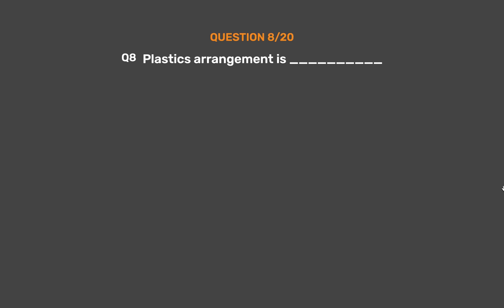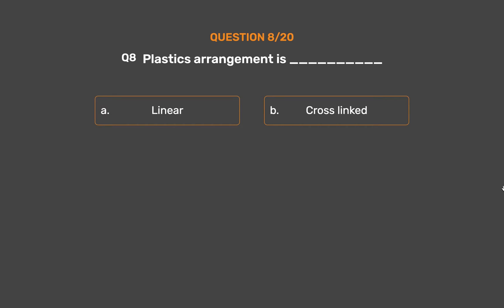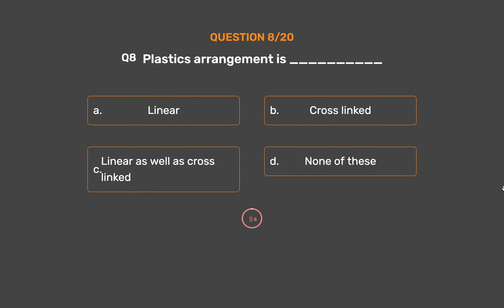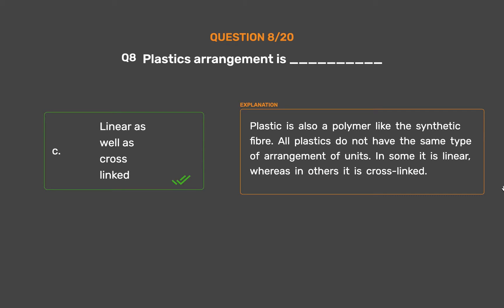Question Number 8. Plastics arrangement is ___. Option A: Linear. Option B: Cross-linked. Option C: Linear as well as cross-linked. The correct answer is Option C. Plastic is also a polymer like the synthetic fiber. All plastics do not have the same type of arrangement of units. In some it is linear, whereas in others it is cross-linked.